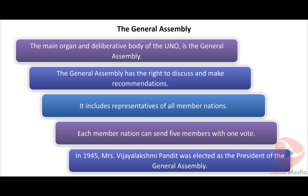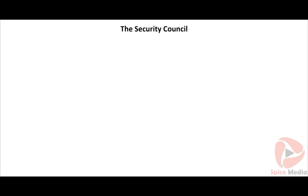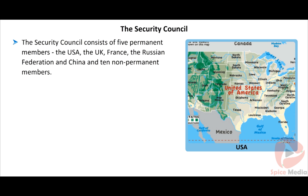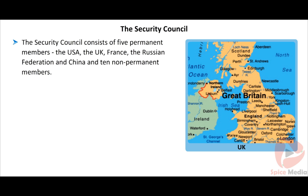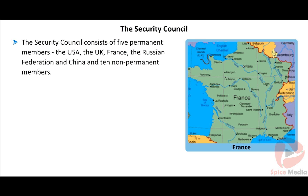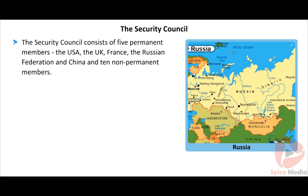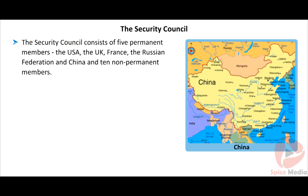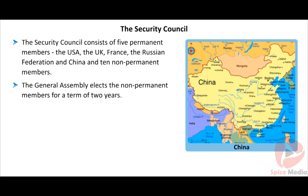In 1945, Mrs. Vijayalakshmi Pandit was elected as the President of the General Assembly. The Security Council consists of five permanent members: the USA, the UK, France, the Russian Federation, and China, and ten non-permanent members. The General Assembly elects the non-permanent members for a term of two years.